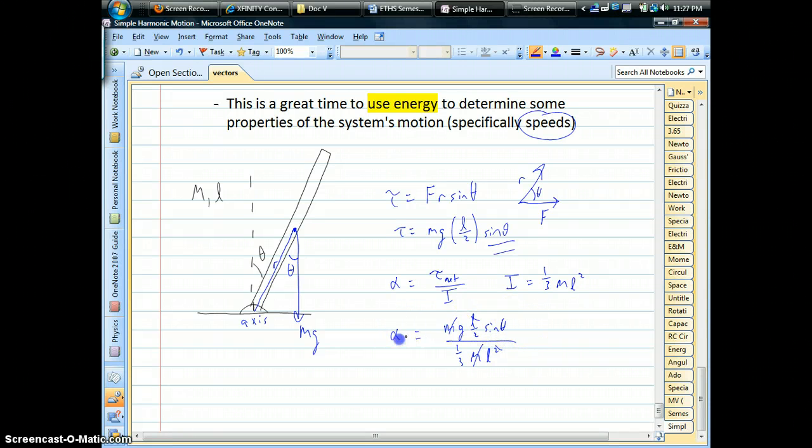Mass drops out. One of the L is going to drop out. And so our initial angular acceleration in this particular case is we've got the gravity there. The three comes up. We have sine theta. And in our denominator, we have what's left over, two L. Okay, so we get something like that. Okay, so that's just using our basic definitions and a little bit of algebra.